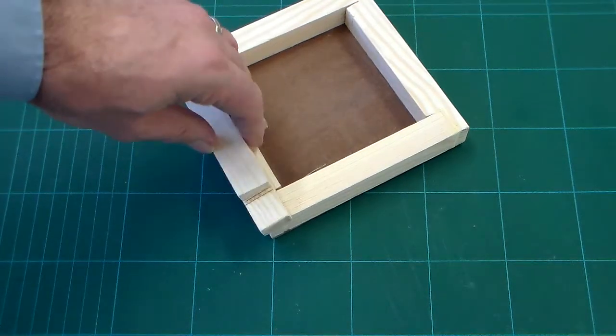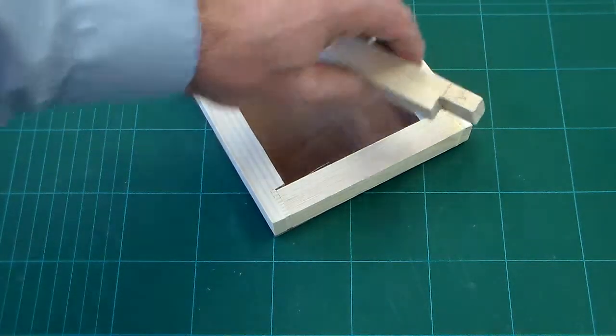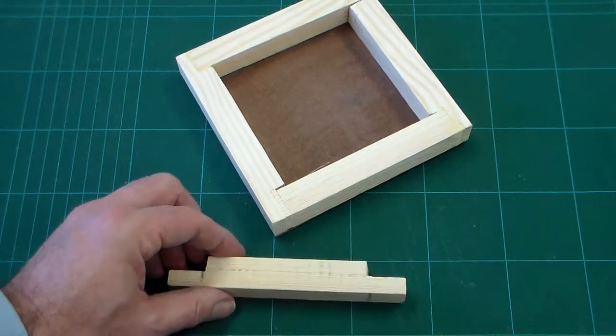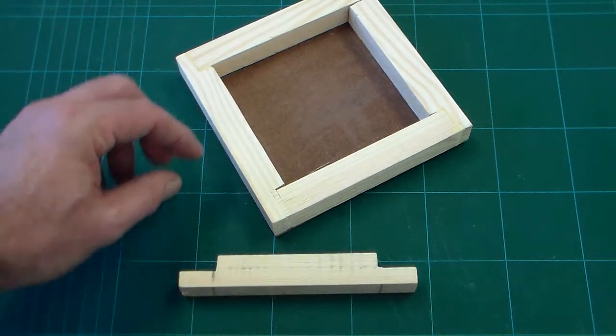We need to mark out two pieces, one for this end, one for this end. The pieces are going to look like this and we need to cut out two of them.